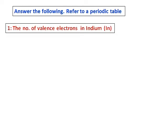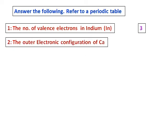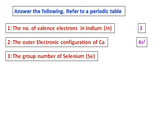Answer the following. Refer to a periodic table. Before answering, go get a periodic table and keep it next to you. The number of valence electrons in indium: look at the group it belongs to, and we'll see that the number of valence electrons in indium is 3. The outer electronic configuration of calcium: calcium belongs to group 2 and period 4, therefore 4s². The group number of selenium is 6, it comes under the oxygen group.